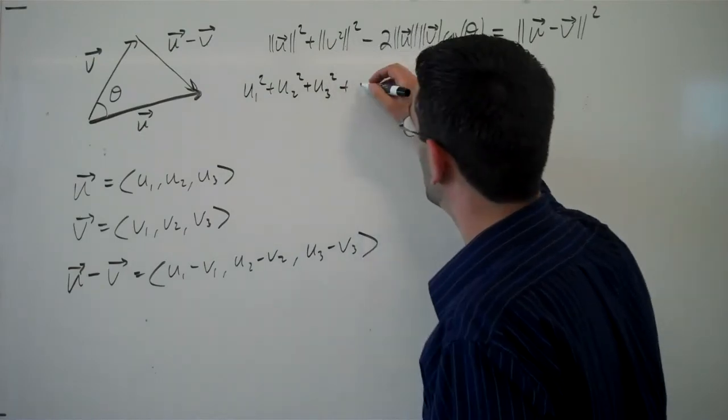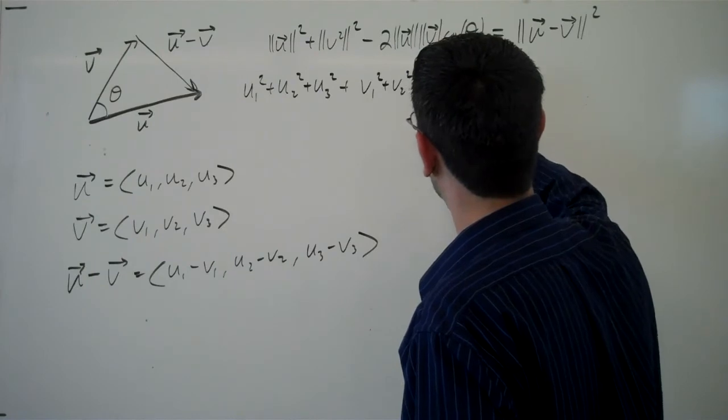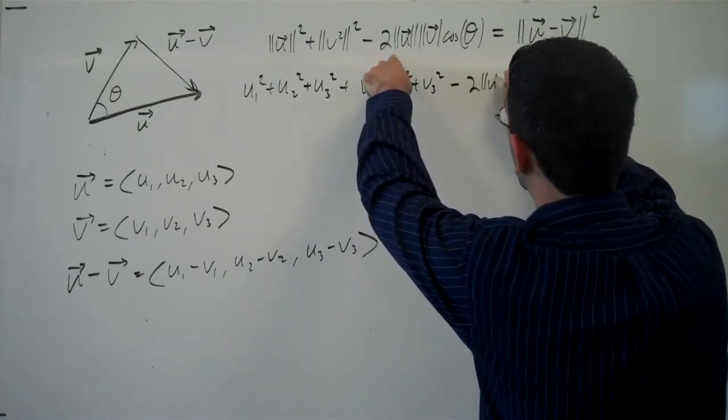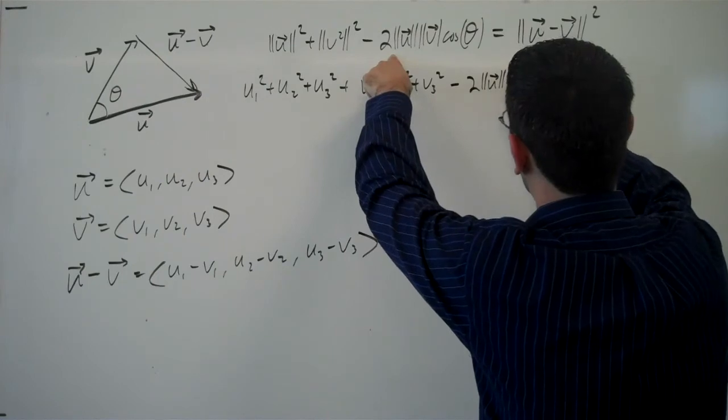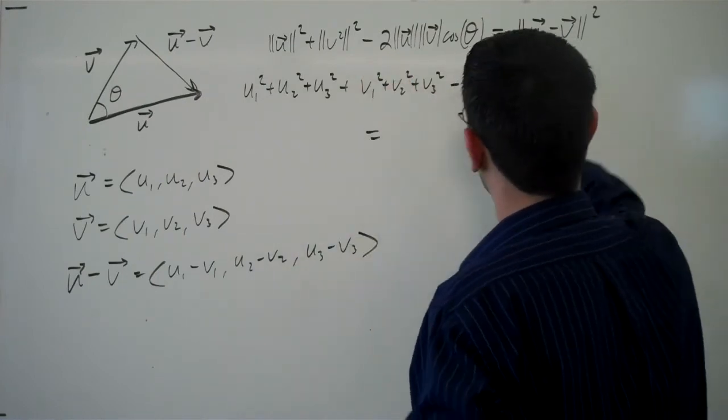Same thing here. We'll end up with v1 squared plus v2 squared plus v3 squared. Here, I'm not going to do anything with this right now. I don't want to make this more complicated than I need it.